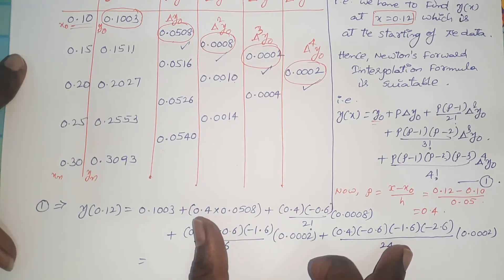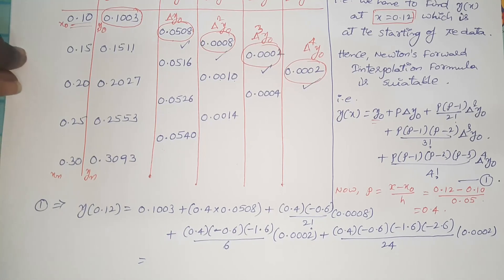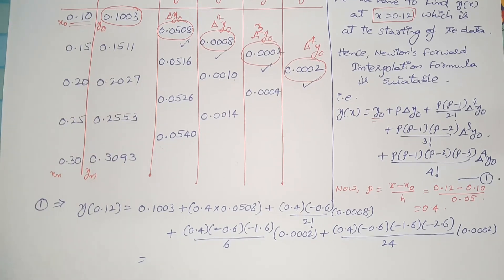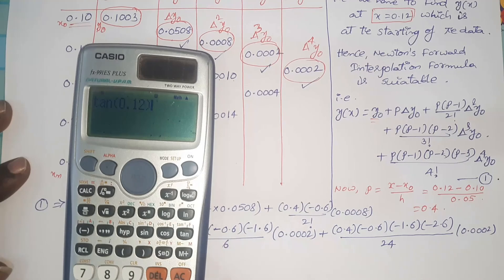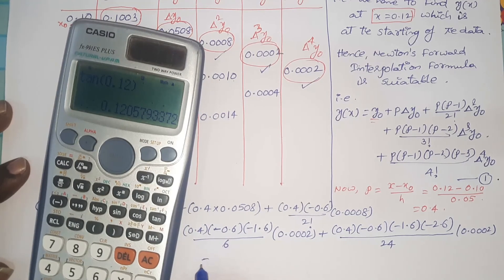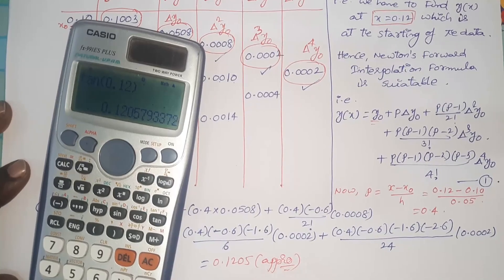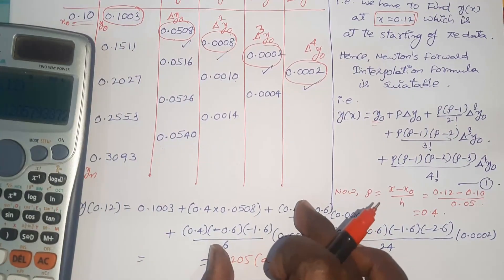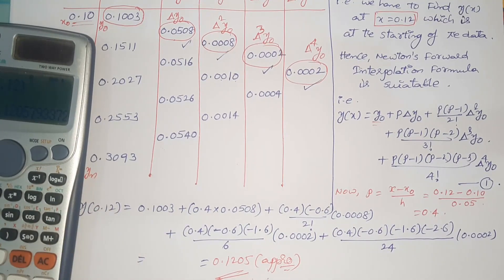Since the function is tan(theta), we can directly verify using a scientific calculator. tan(0.12) = 0.1205. You can compute this directly from the calculator or simplify the interpolation expression — either way you will get the same value. This is one of the applications of Newton's forward interpolation formula. Thank you very much; in the next video I will give some more problems.